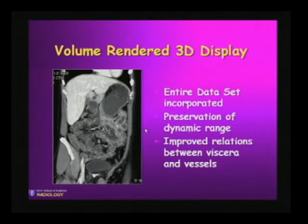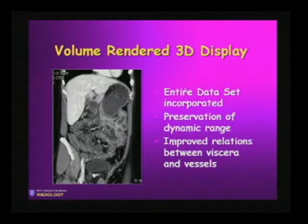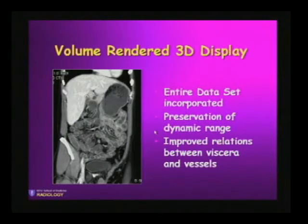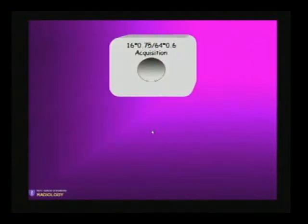Really, the major advantage now that technology and computer software has given us — available with most vendors — is the ability to create volume-rendered 3D images. Here we incorporate the entire data set. We preserve the dynamic range of contrast so the image looks very similar to a CT image, rendered by brightness and opacity of tissues. You get improved relationships between the viscera and the vessels, and the opportunity to interact with this on a 3D workstation.